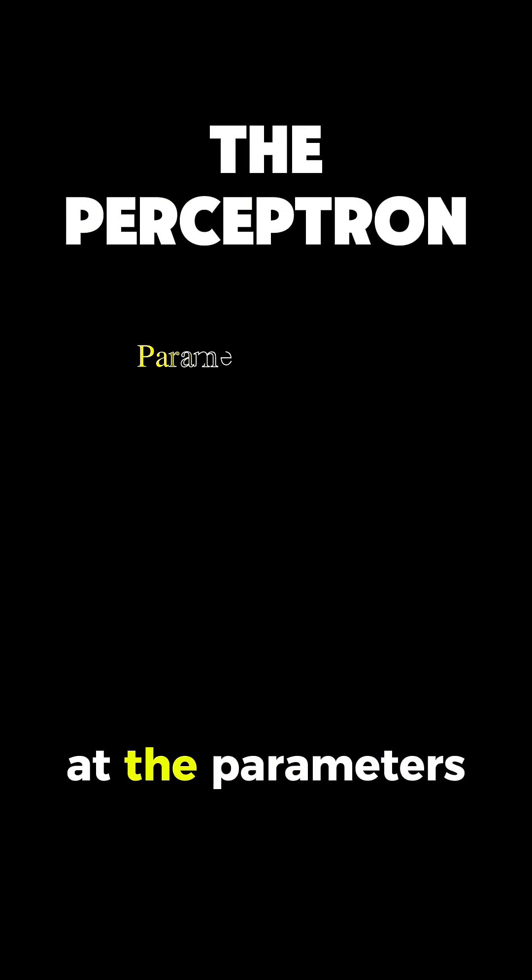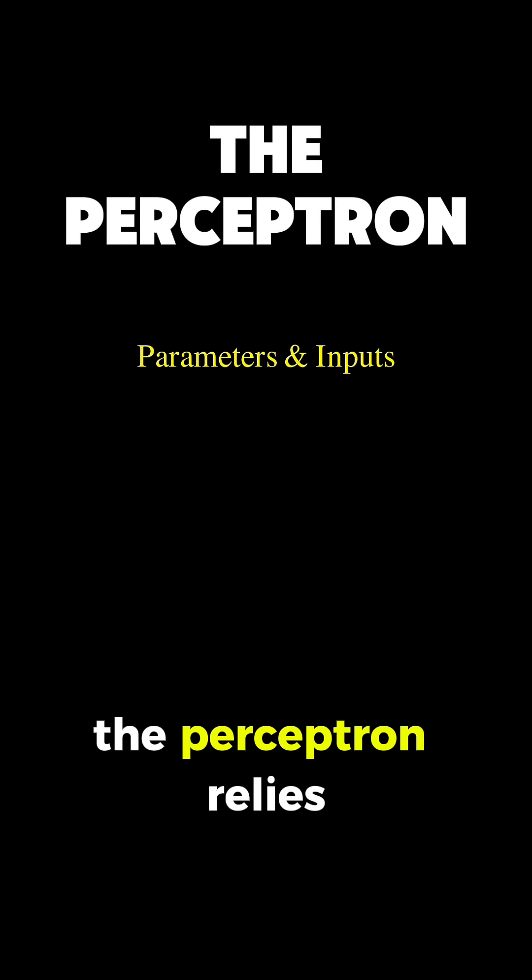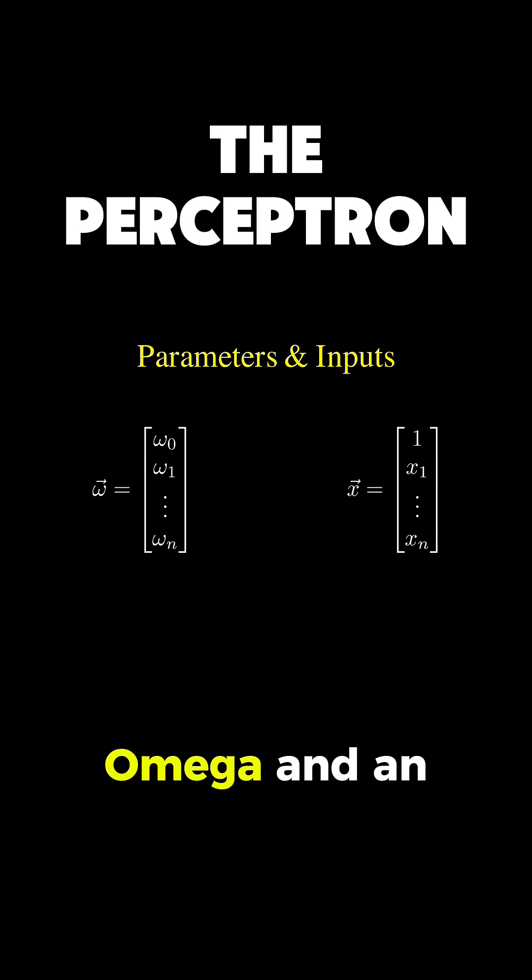Now, let's look at the parameters. The perceptron relies on a weight vector, which we'll call omega, and an input vector x. Notice that both vectors have one extra dimension. This is for the bias term, which allows our separating line to not pass through the origin.